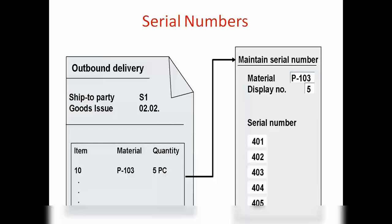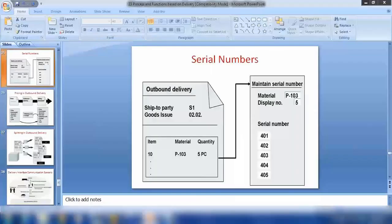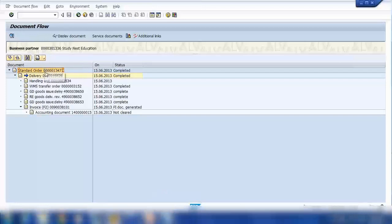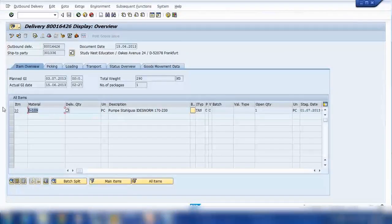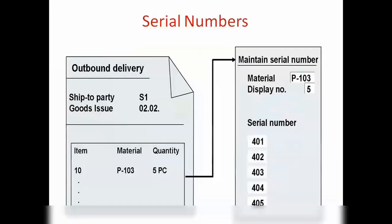We also have a functionality called serial numbers. For any reason a company wants to track each and every material going out, they can use the serial number functionality. For each item in the outbound delivery, the system can generate one unique number. So for every new item created in the outbound delivery, the system will generate a number for it.